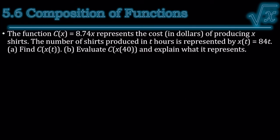The function c(x) = 8.74x represents the cost in dollars of producing x shirts. The number of shirts produced in t hours is represented by x(t) = 84t. Find c(x(t)). So x of t is on the inside. It's going into function c. So it's 8.74 times x. But x is 84t. Well, I multiply the numbers, which gives me 734.16t.